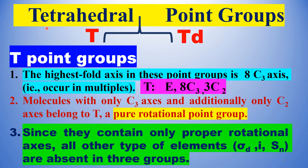Let us first study the tetrahedral cubic point group. There are two types of tetrahedral point groups: T point group and Td point group. The principal axis of symmetry in the tetrahedral T point group is the C3 axis of symmetry. It occurs eight times — there are eight C3 axes of symmetry. In addition, there are three C2 subsidiary axes of symmetry.